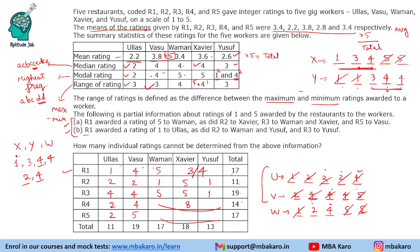So 4, 4, 2 gives 10 and 1, 3, 4 gives 8. Vaman is the only person out of them receiving 2 points, so Vaman will receive 2 points and the others will receive 4 and 4. This is done; Vaman is also done.